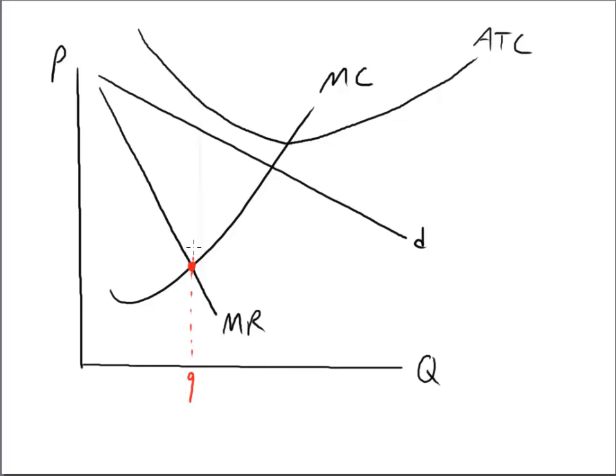At that quantity, let's find out how much consumers are willing to pay by going to the demand curve. At that quantity, the associated price is P. Now, to find if we're making profits or losses, go up to the average total cost curve to find the ATC of producing a unit. Here's our average total cost.